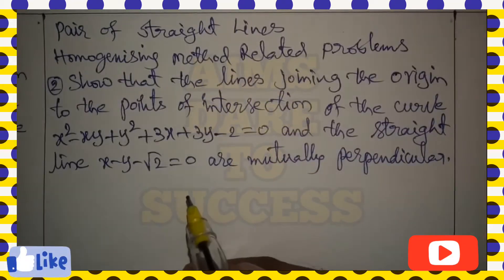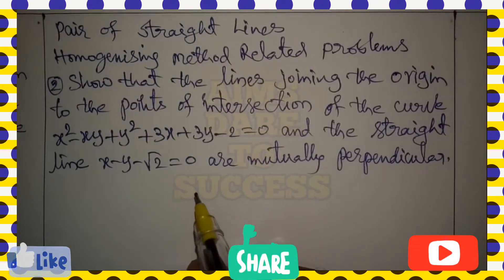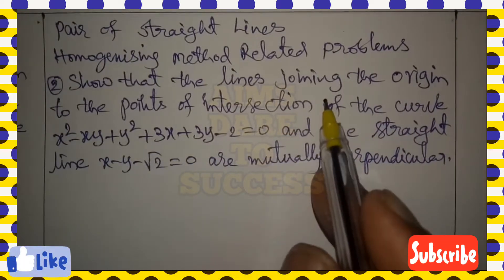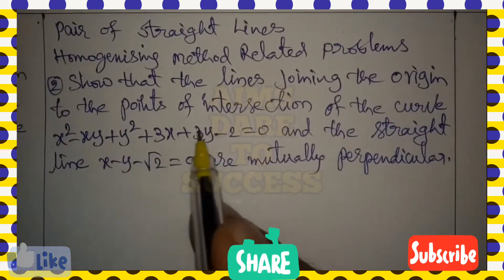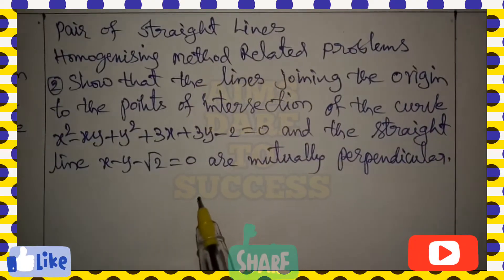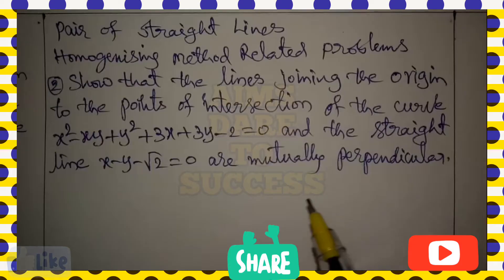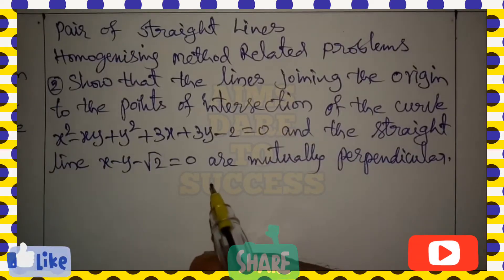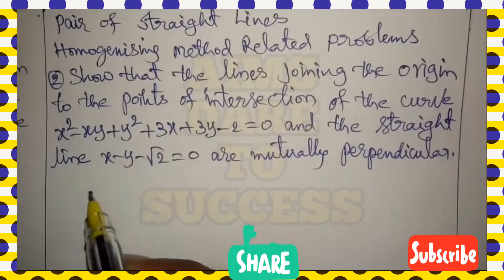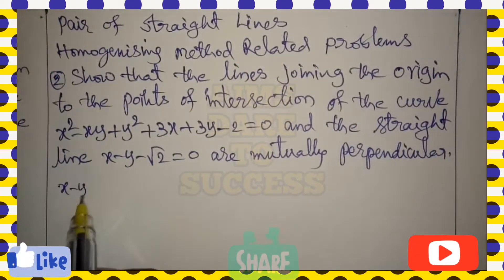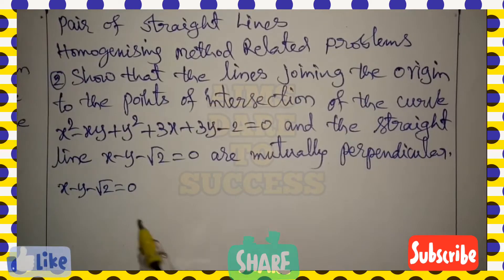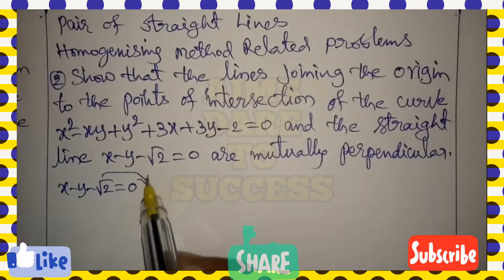Welcome to AIMS Dare to Success YouTube channel. Today we are going to discuss a Pair of Straight Lines homogenizing method related problem — a very important previous question. Show that the lines joining the origin to the points of intersection of the curve x² - xy + y² + 3x + 3y - 2 = 0 and the straight line x - y - √2 = 0 are mutually perpendicular.